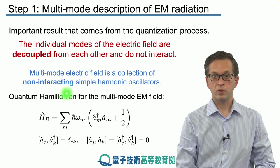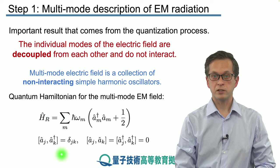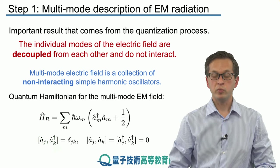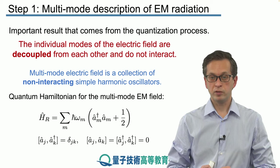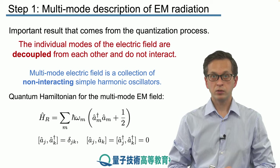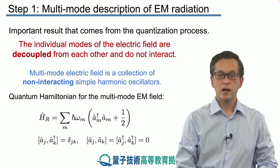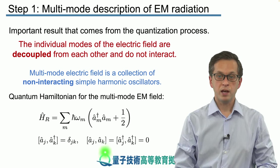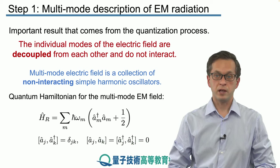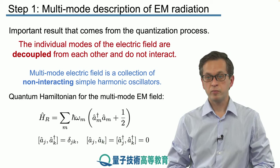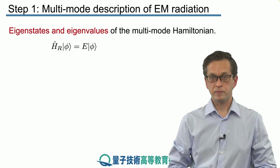These are the commutation relations satisfied for multi-mode case where a and a dagger commute if they act on different modes. If they act on the same mode, they do not commute and their commutator is given by one. And a always commutes with a and a dagger always commutes with a dagger regardless of which mode we are in. These are very important relations and I urge you to commit them to your memory.